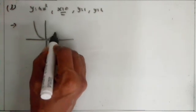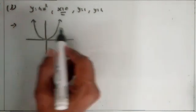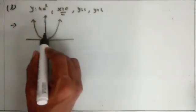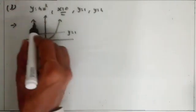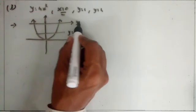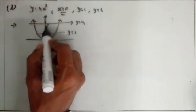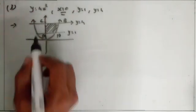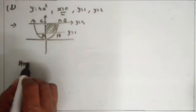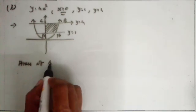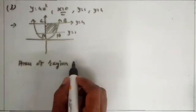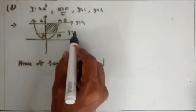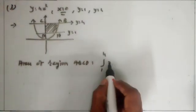So y is equal to 4x square, line x is equal to 0 — that is the y-axis — y is equal to 1, and y is equal to 4. Here we want to get the area of only this region A, B, C, D. So area of region ABCD is equal to the integral from 1 to 4 of x dy. Here we use the y-axis, line y is equal to 1, y is equal to 4. So we take a definite integration from 1 to 4 of x dy.